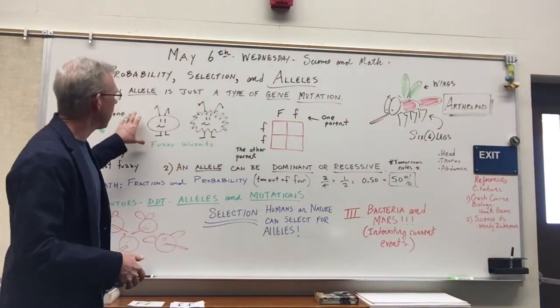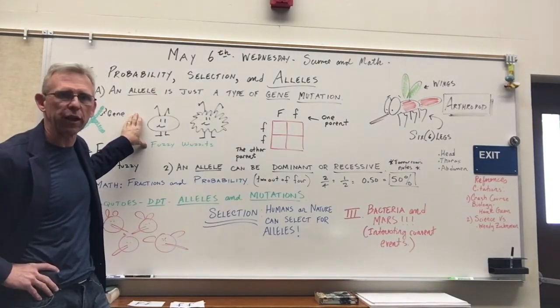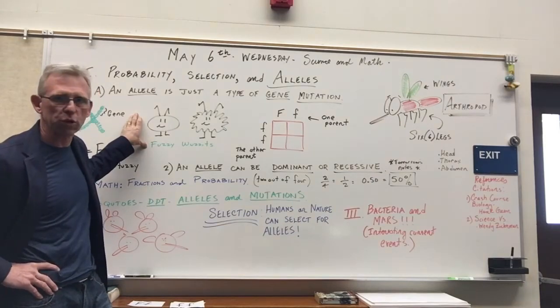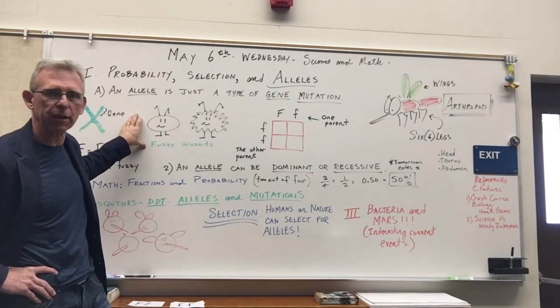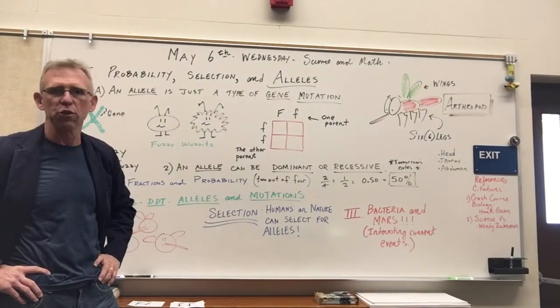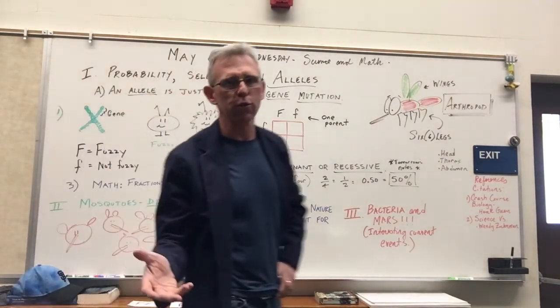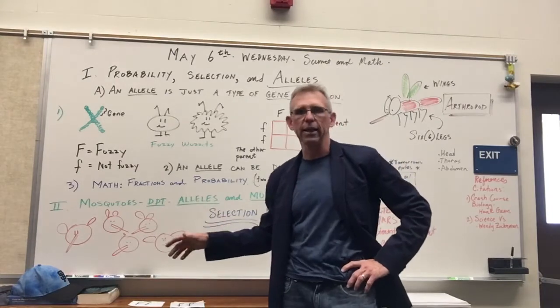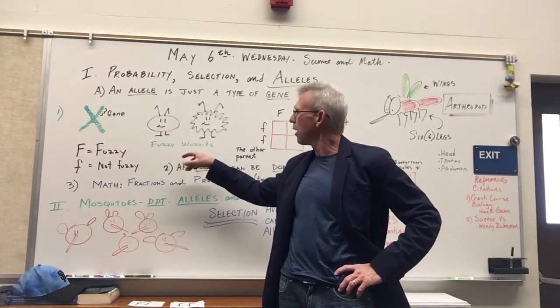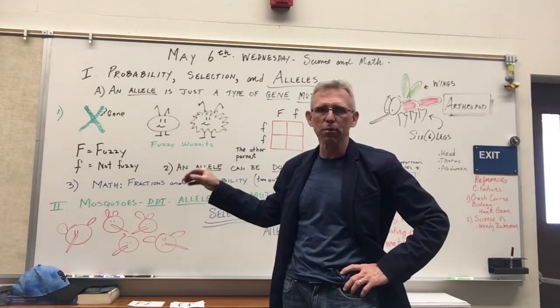So this part right here, I've got a couple of references over there, I'll mention those at the end. This right here came from a crash course example. They use squirrels, I'm going to use this made-up animal called the fuzzy wuzzit, and I made it up because it's easy to draw. You draw a circle or you draw a fuzzy circle. And I would like you to think of this fuzzy wuzzit as any animal.